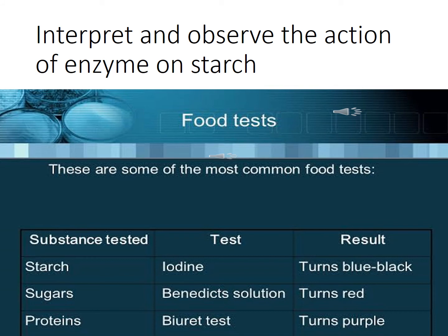There are some of the most common food tests: starch, sugar, proteins, and fats. We have discussed two of them — starch and proteins. For starch: the test is iodine, and the result is it turns blue-black. For protein: we use the biuret reagent, and the result is it turns purple.